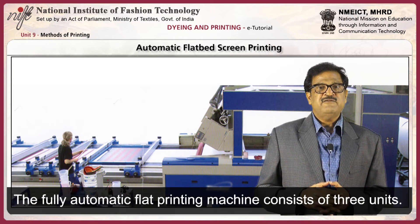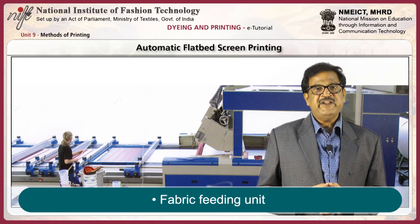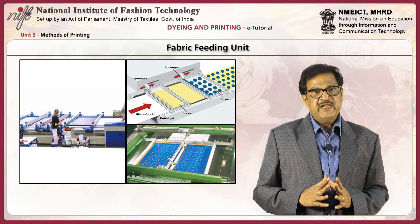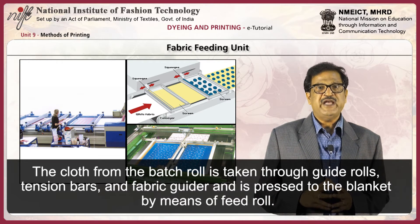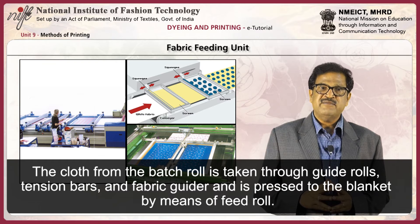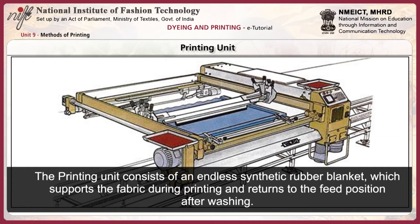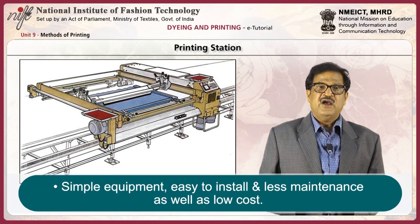Automatic flatbed screen printing: The fully automatic flatbed screen printing machine consists of three units — a fabric feeding unit, a printing unit, and a drying unit with a plaiter. In the fabric feeding unit, the cloth from the batch roll is taken through guide rolls, tension bars, and fabric guider, and is pressed to the blanket by means of a feed roll. The printing unit consists of an endless synthetic rubber blanket which supports the fabric during printing and returns to the feed position after washing.